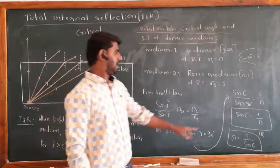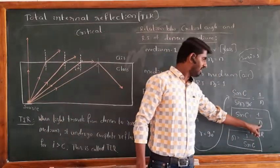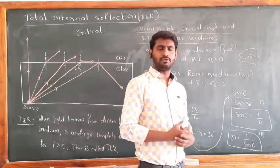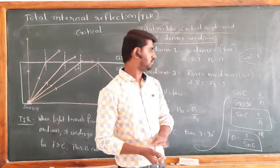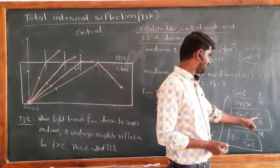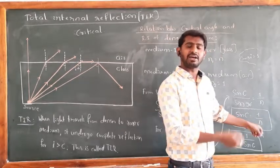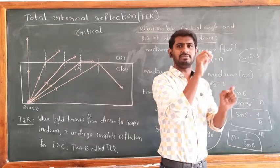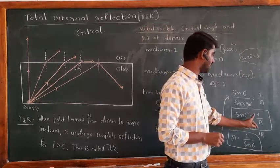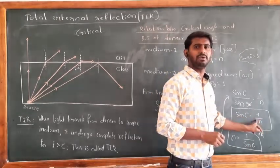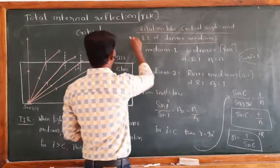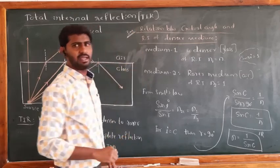This is the relation between the critical angle and the refractive index of a medium. If you know the refractive index n of a medium and want to find the critical angle c, take the reciprocal of n to get a decimal value, then apply the inverse sine function: c equals sine inverse of 1 over n.